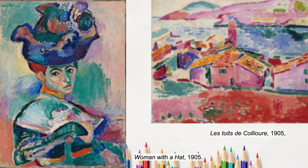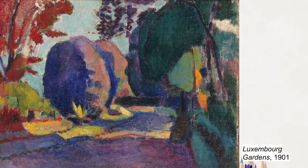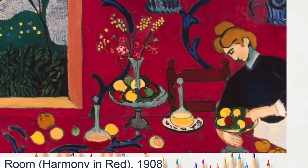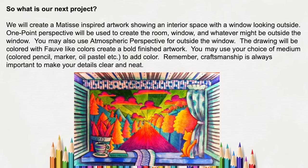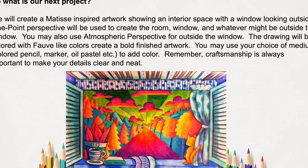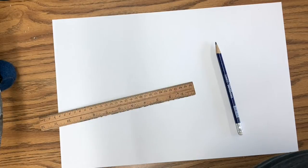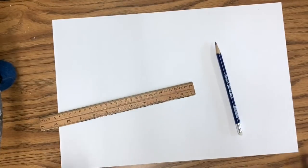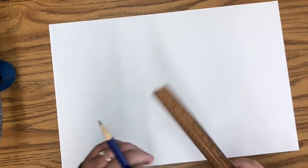Now these are some examples of Fauvist works of art. If you look there are so many bright colors and different designs. This is what we are going to create. You will need a 12 by 18 piece of paper, a ruler, and a pencil.